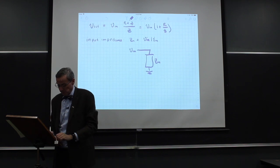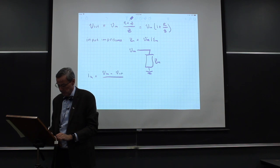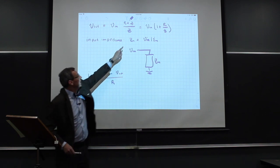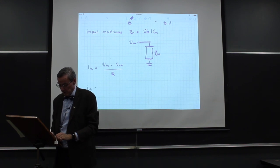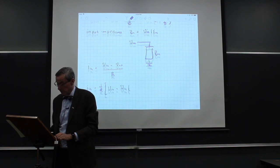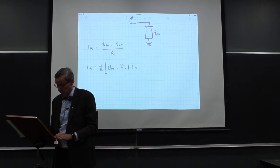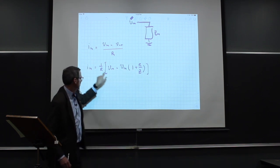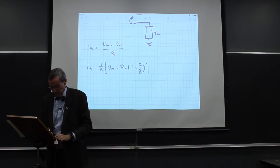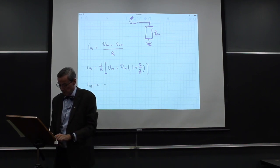So the input current is (V_in − V_out) / R. And V_out is simply V_in times (1 + R/Z). So I_in equals (1/R) times [V_in − V_in(1 + R/Z)], which simplifies to V_in minus V_in minus V_in·R/Z. The V_in terms cancel and the R's cancel, so the input current is −V_in / Z.